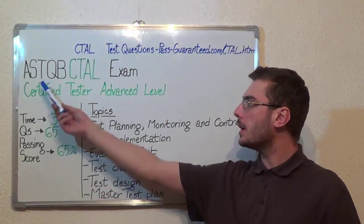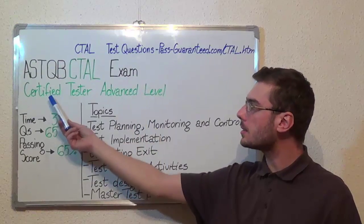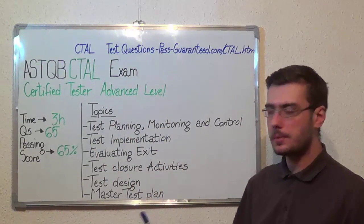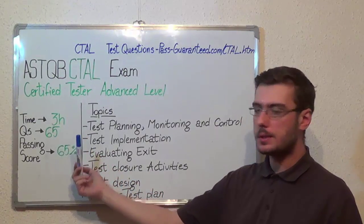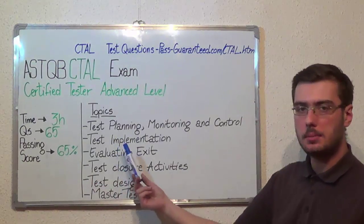Hello everyone, today I will present the ASTQB CTAL exam: Certified Tester Advanced Level. Here you have some basic test information. The duration of this exam is 3 hours, there are 65 questions, and the minimum passing score is 65%. Now let's move on to the topics.